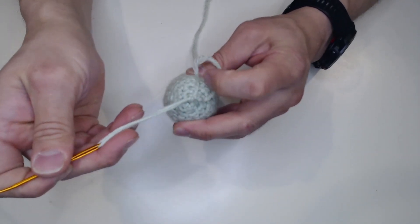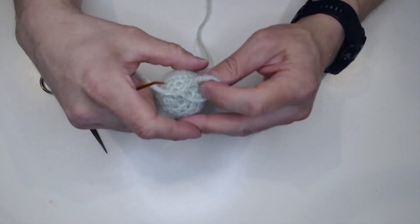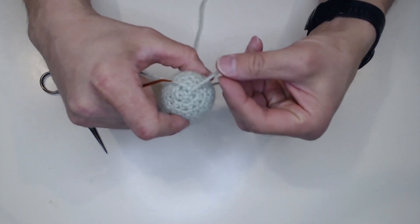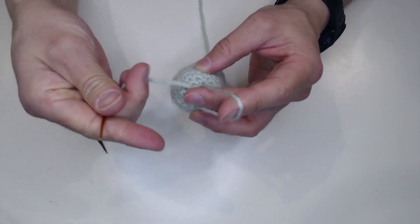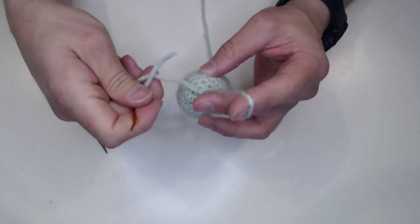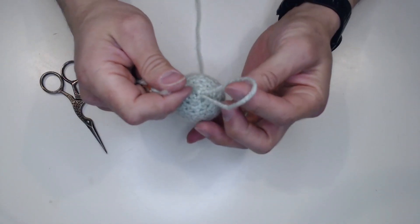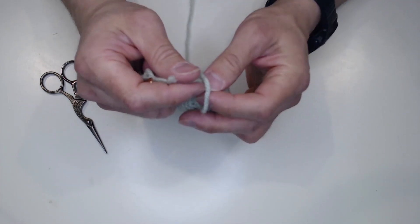And so now you have the free loop here attached to the last loop attached to the yarn. And what you do from here is you reach through the loop, take your two fingers, your thumb and your index finger, and you grab the yarn.